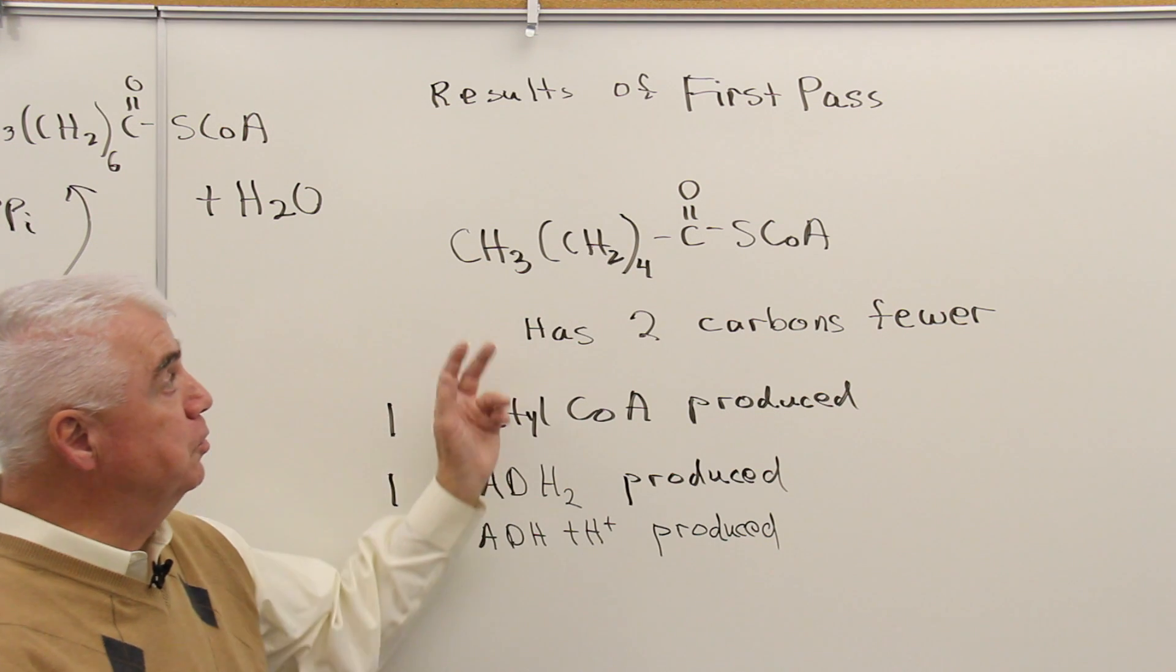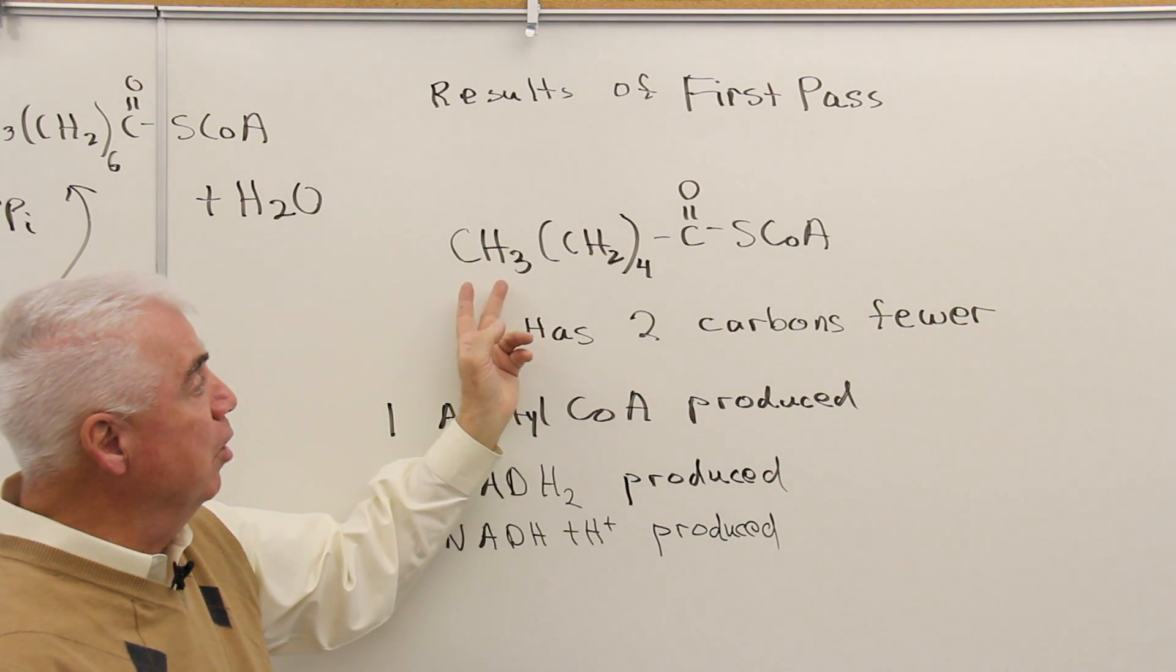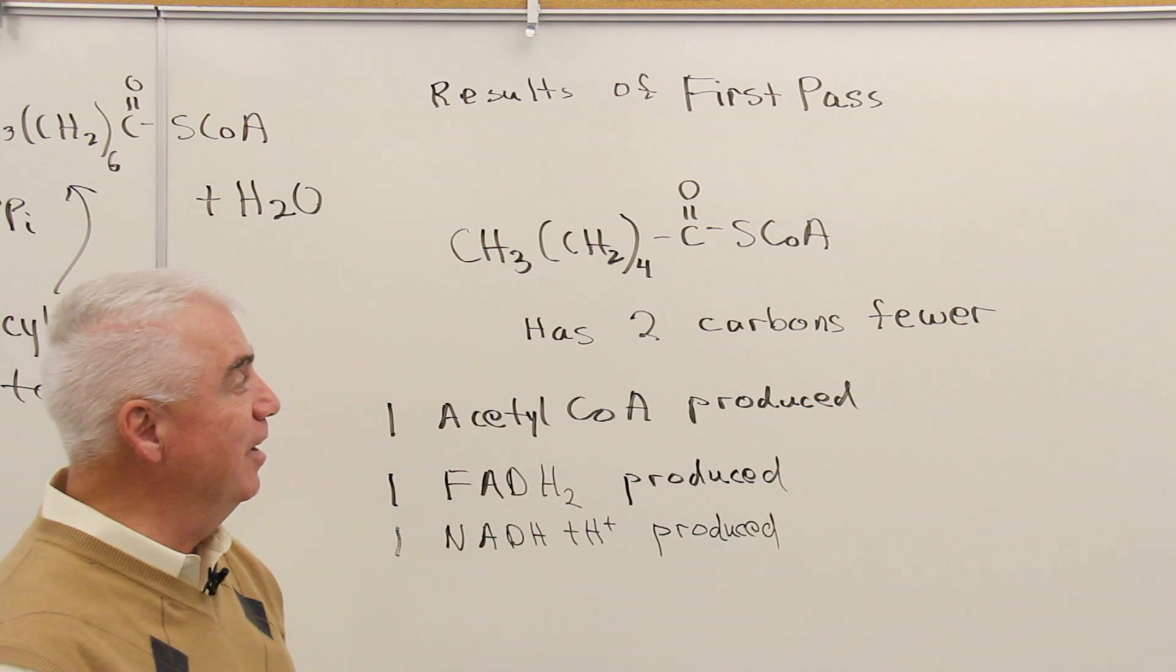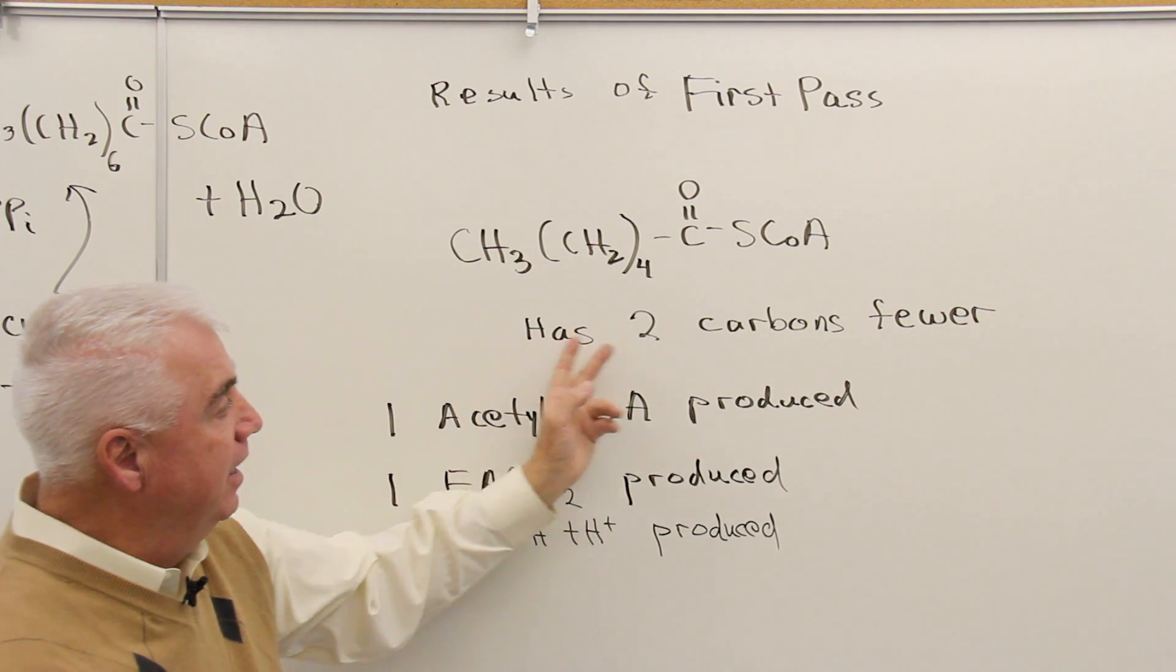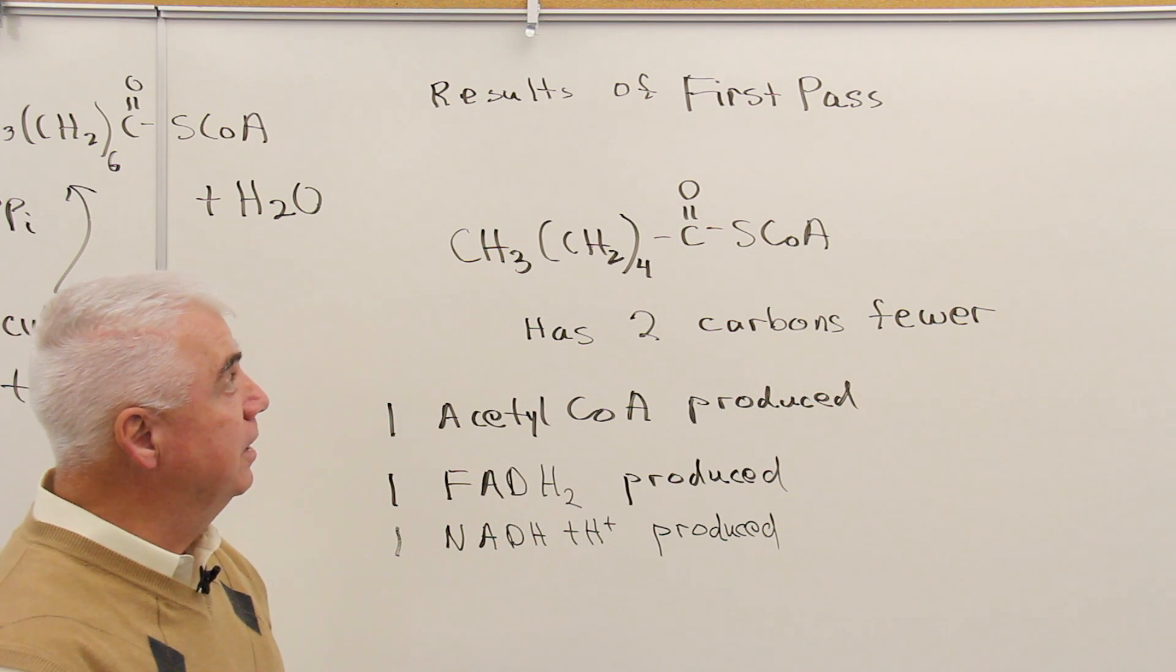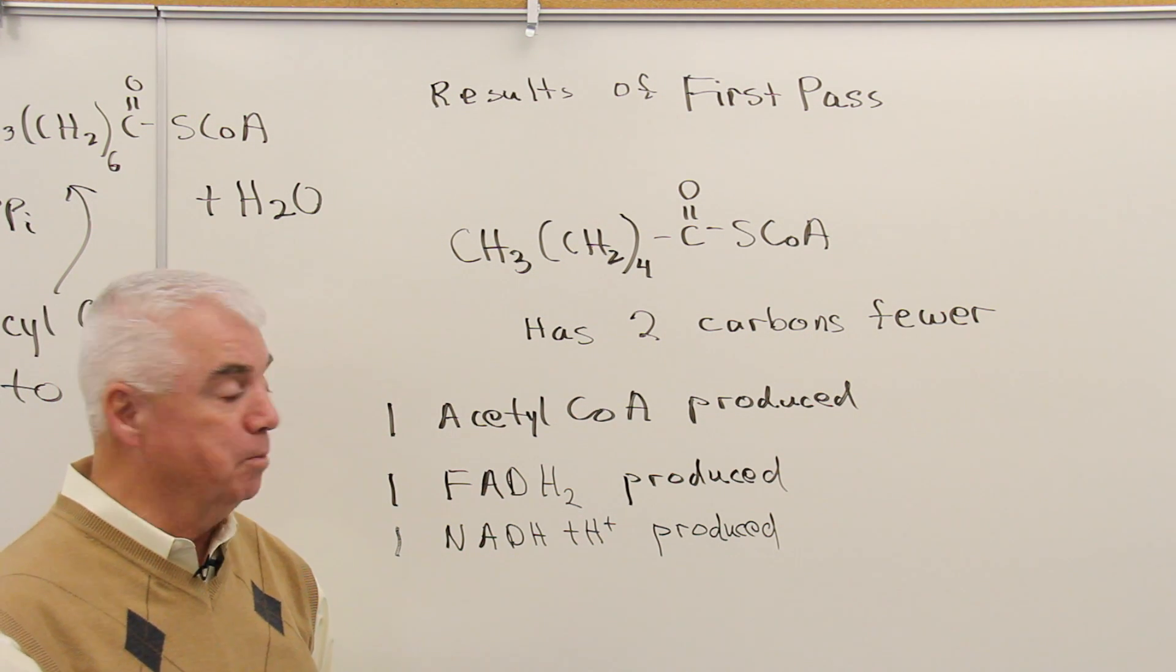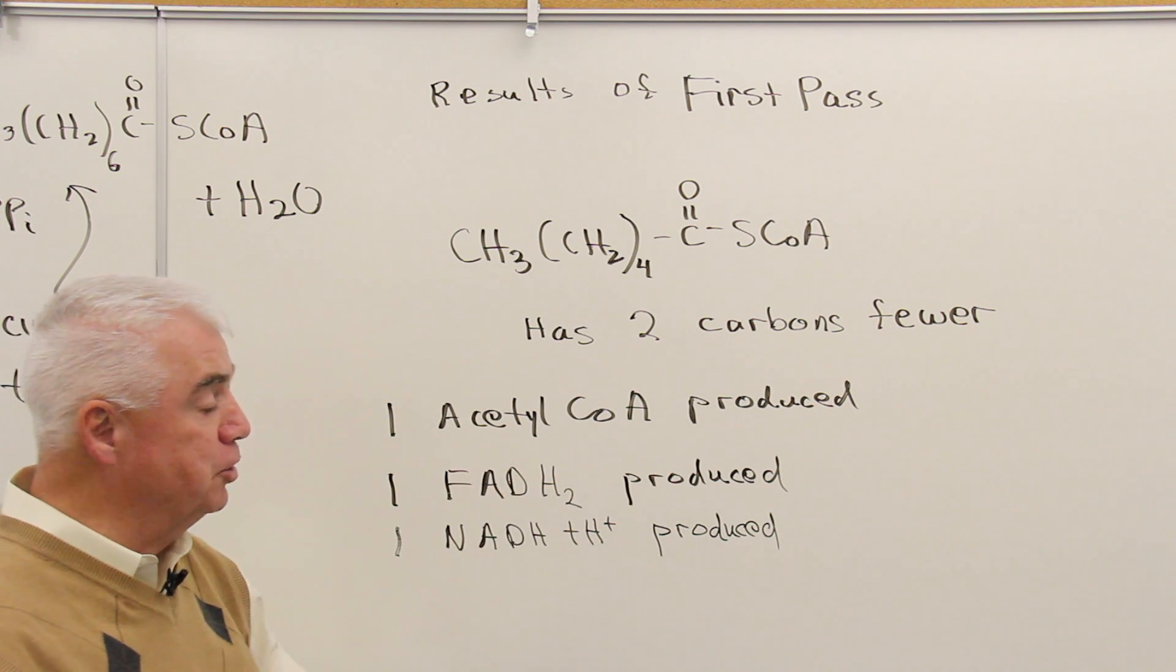The product of the first pass through the fatty acid spiral, or the beta oxidation process, is this molecule. It has two fewer carbons. When we started, we had a number six right there. Now we're down to four. Two of those carbons have been lumped off, and a molecule of acetyl CoA has been produced. I mentioned there are four reactions. In one of those reactions, a hydrogen molecule is pulled out, and it combines with FAD to form FADH2.